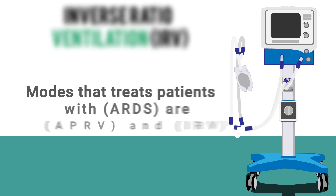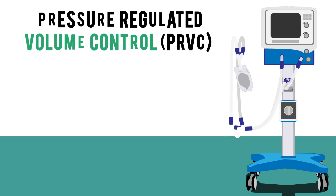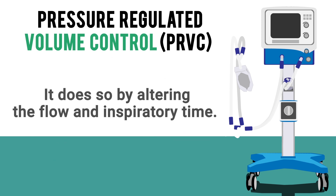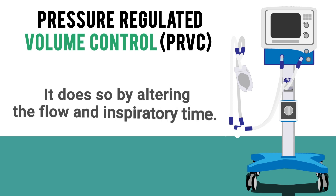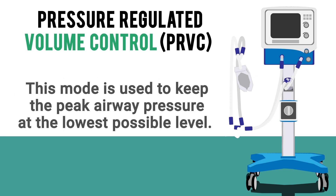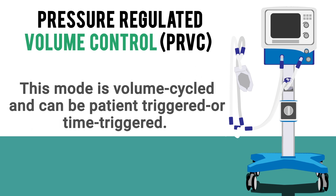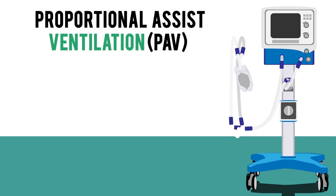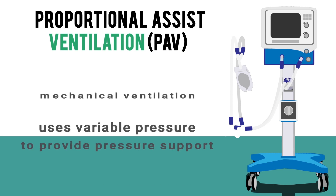PRVC, or Pressure Regulated Volume Control, is a mode of ventilation that provides volume-controlled breaths with the lowest pressure possible by altering flow and inspiratory time. This mode keeps peak airway pressure at the lowest possible level. It is volume-cycled and can be patient-triggered or time-triggered.